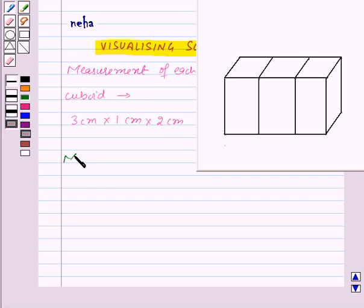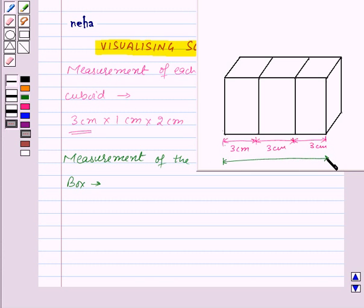Now here, length of each cuboid is 3 cm. So this will be 3 cm, again this will be 3 cm, and this will also be 3 cm. Thus the length of this whole box will be 3 cm plus 3 cm plus 3 cm, which will be 9 cm.